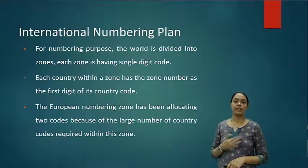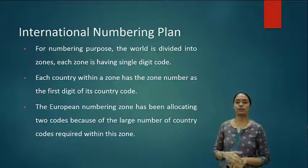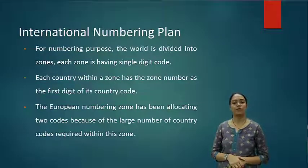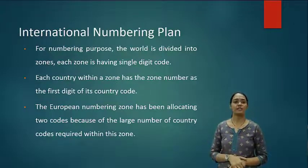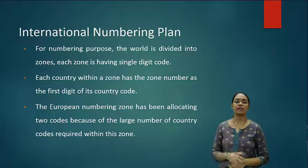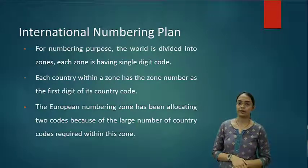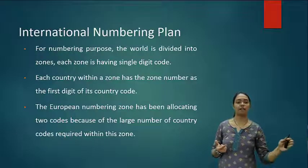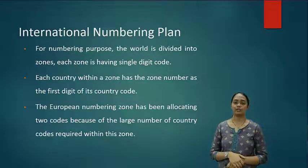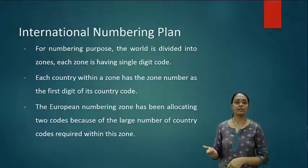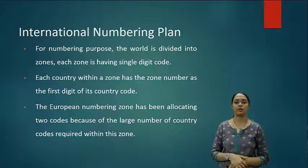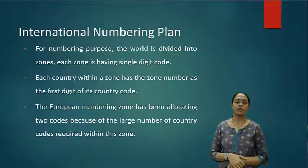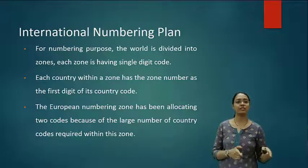These were the different types of numbering plan in the national numbering category. The other type is the international numbering plan. For numbering purposes, the world is divided into zones. Each zone has a single-digit code written as the most significant digit, followed by the rest of the number. For India, we have +91, and after that the number is identified by the user number. Each country within a zone has the zone number as the first digit of its country code. The European numbering zone has been allocated two codes because of the large number of country codes required.